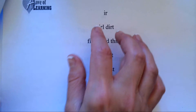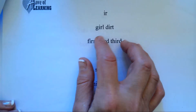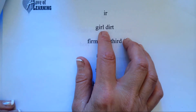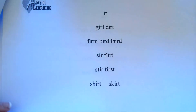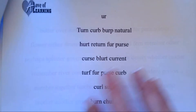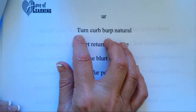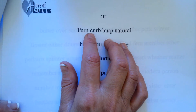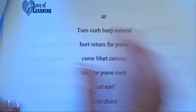I-R makes UR. G-U-R-L, girl. D-U-R-T, dirt. U-R makes UR. T-U-R-N, turn. K-U-R-B, curve.